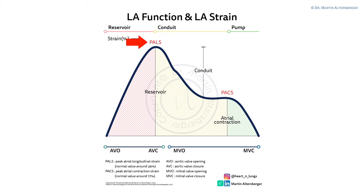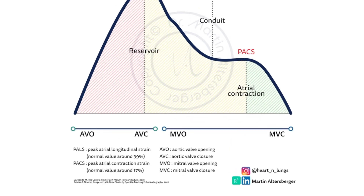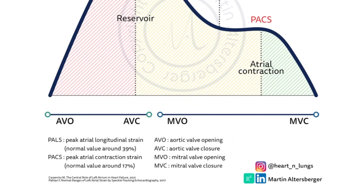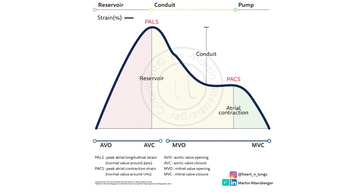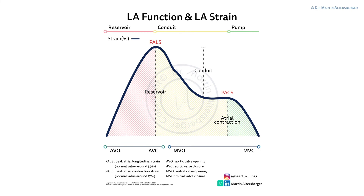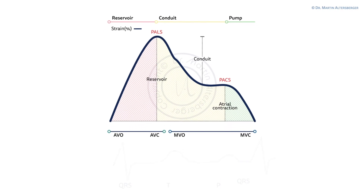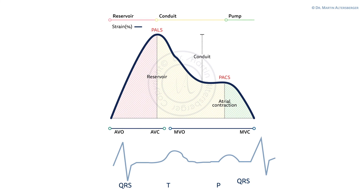There are several measurements we can obtain. The first is the PALS — peak atrial longitudinal strain — and the second is the PACS — peak atrial contraction strain. The normal value for PALS is around 39 (a positive value), and for PACS approximately 17 (also a positive value). If you compare the LA strain with the ECG, you see the QRS complex, the second QRS complex, the T wave, and the P wave.